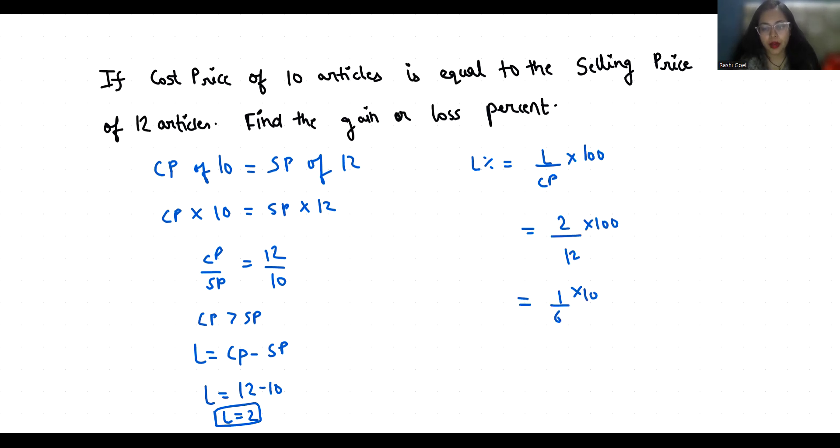So 100 by 6 is... 6 times 1 is 6, here 40, 6 times 6 is 36, then again 4, we'll put decimal, 06 is 36. So it's a non-terminating decimal.